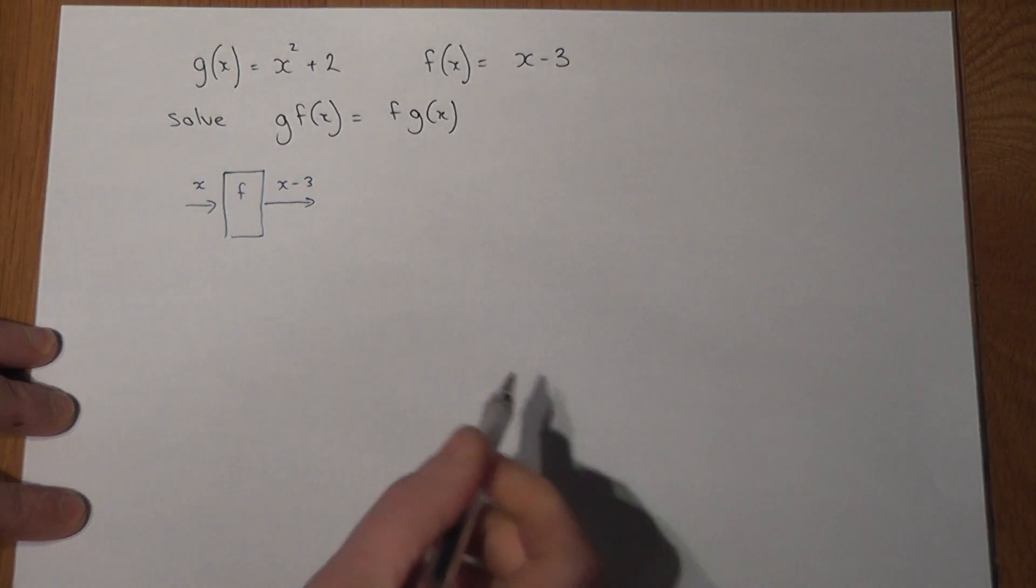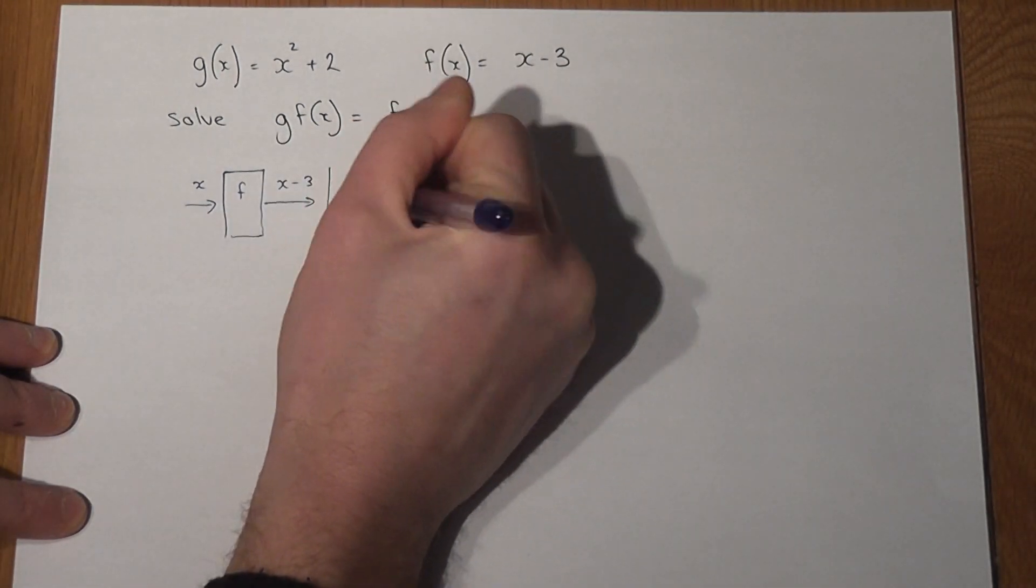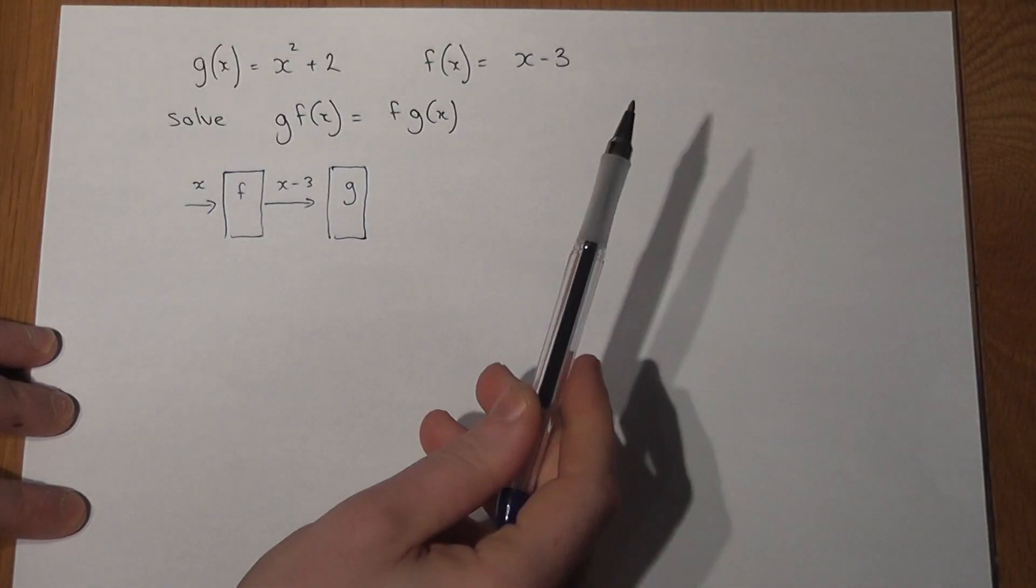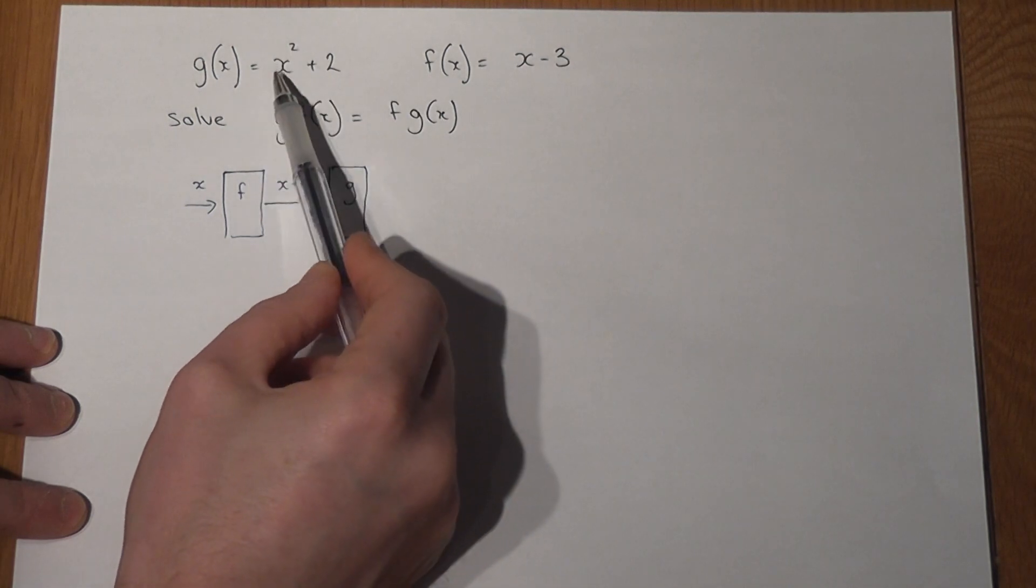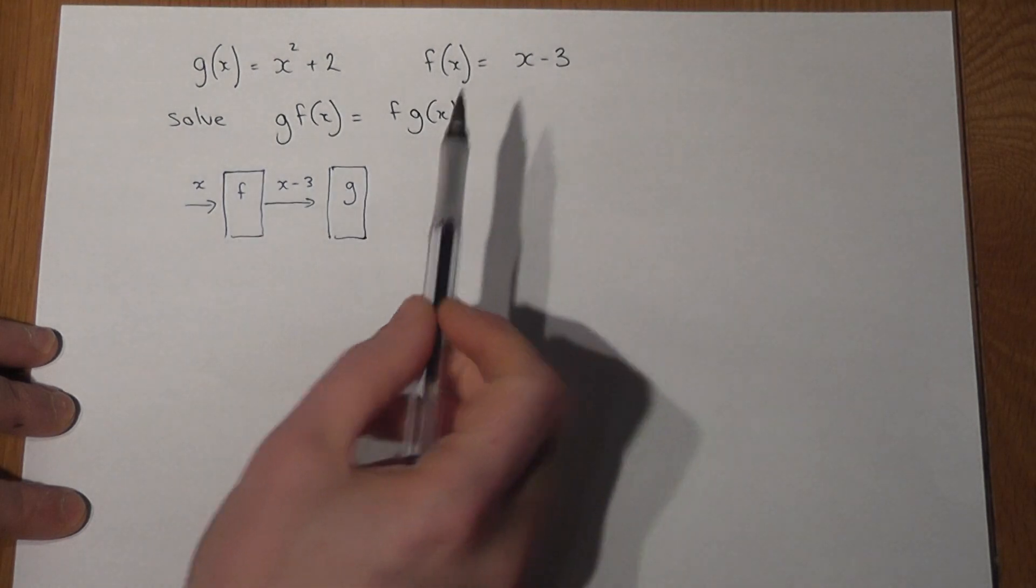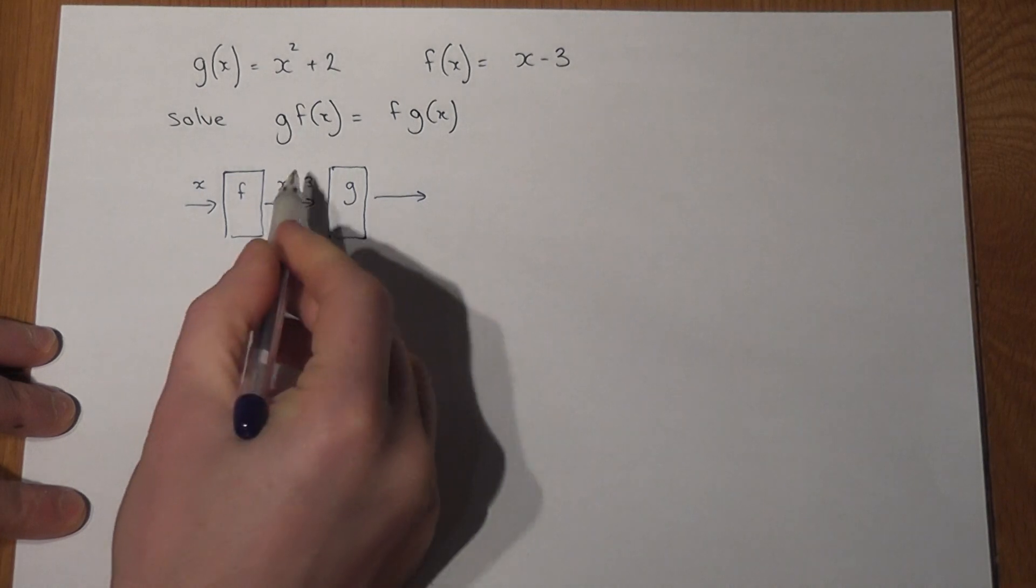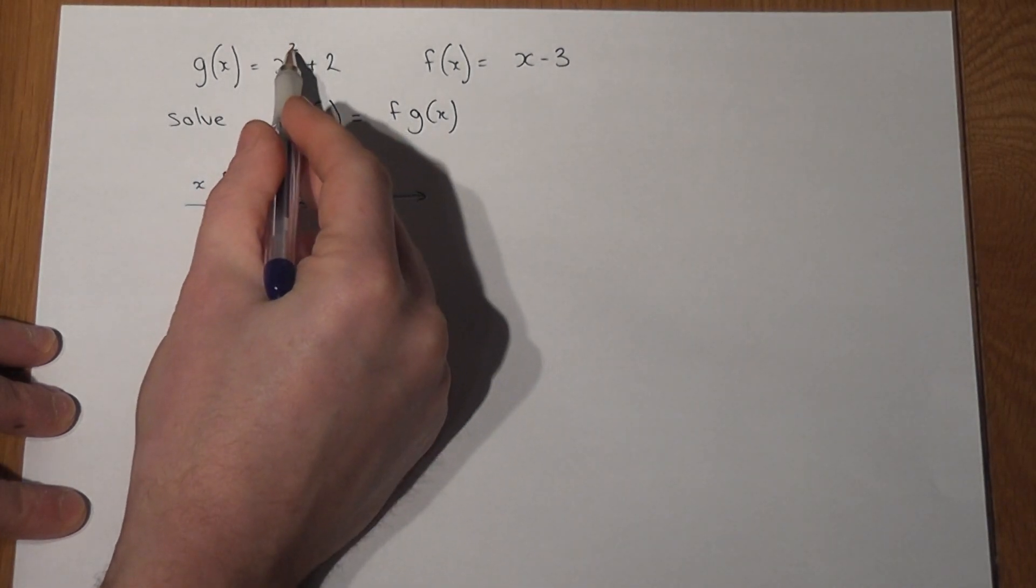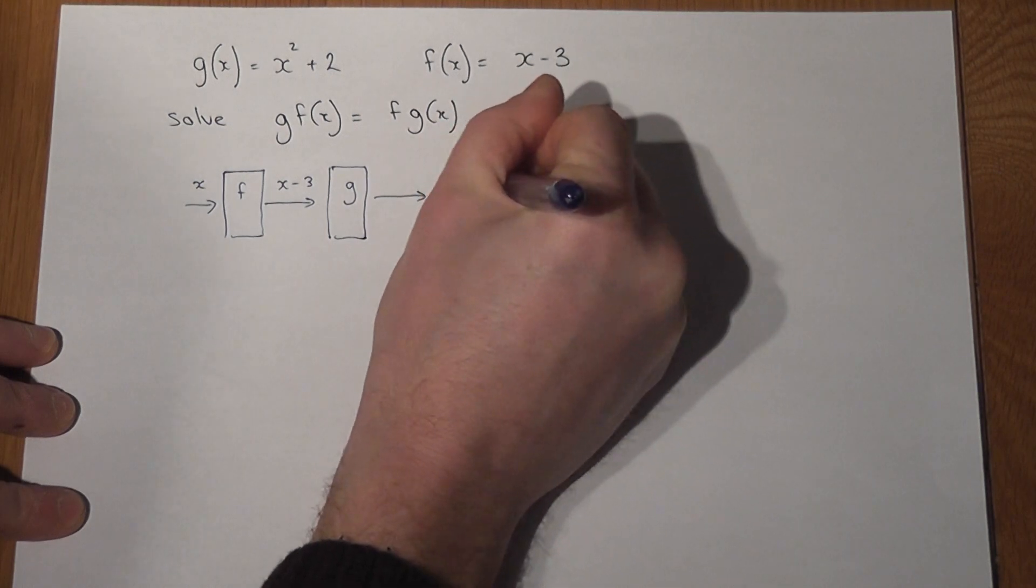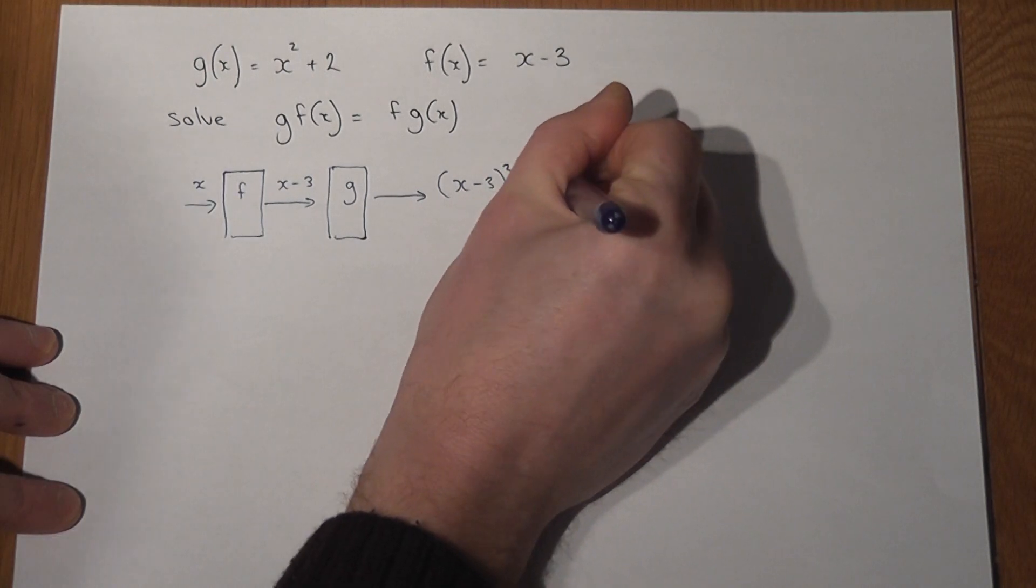Then the function g happens. Now g of x says basically whatever the input is we square it and add 2. However, the input is actually x take away 3, so the x take away 3 is being squared and we then add 2. So the output is x take away 3 all squared add 2.